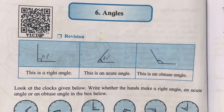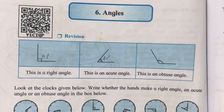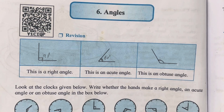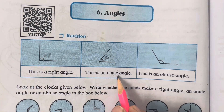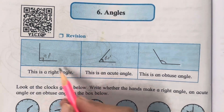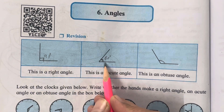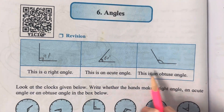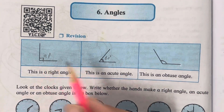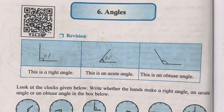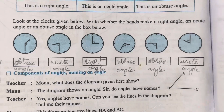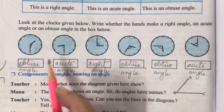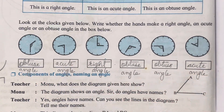We have already studied these before. A right angle is 90 degrees, an acute angle is less than 90 degrees, and an obtuse angle is more than 90 degrees. Now there are a few examples given — we are going to study the different types of angles in the form of a clock.